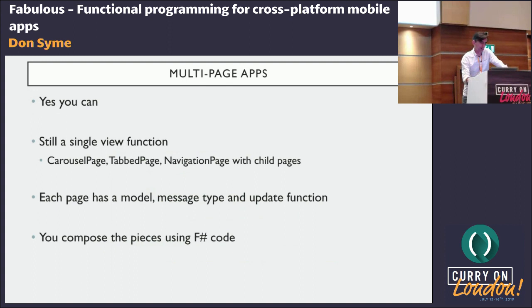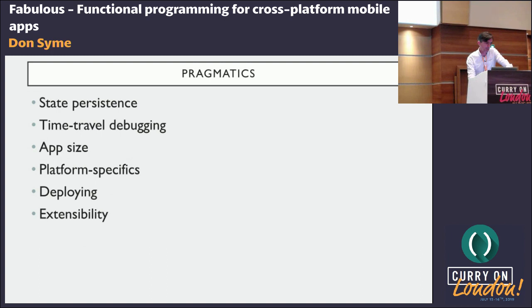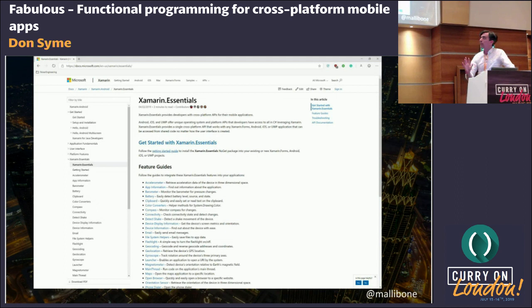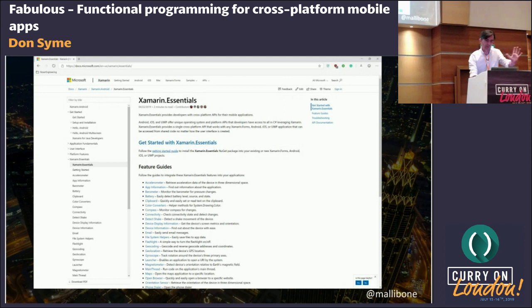Multi-page apps — I mentioned Fabulous Contacts as an example. The same model applies: instead of the view function giving one page back, it gives back all the currently visible pages. There are lots of pragmatics all covered in the Fabulous docs: state persistence, app size, platform specifics, deploying, and crucially extensibility. It takes you through examples of how to add maps as an extension into Fabulous — and you can do that for any extensions available in the Xamarin universe. Xamarin Essentials covers things like sending emails, connectivity, compass, battery, geolocation — all the things on a phone that drive a lot of app logic.